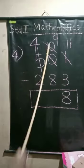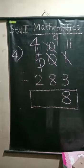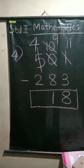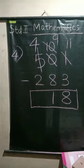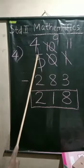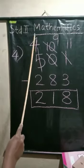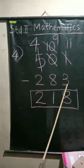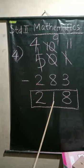Then 9 minus 8. Count from 8 to 9: After 8, 9 is 1. Then 4 minus 2: After 2, 3, 4, and we get 2. So we can say 501 minus 283 equals 218.